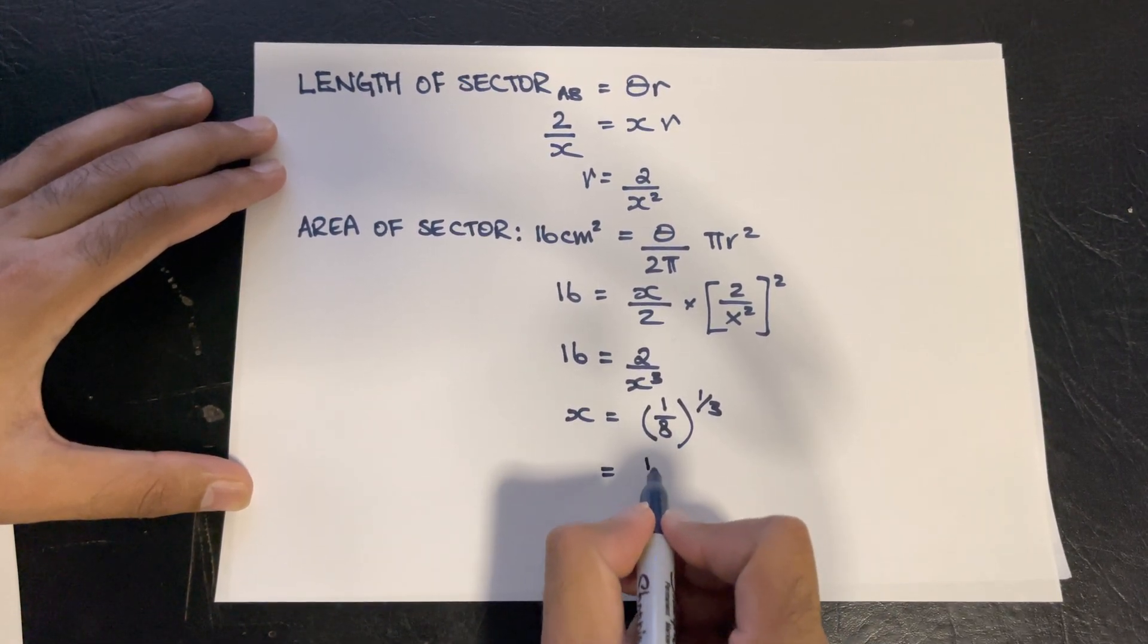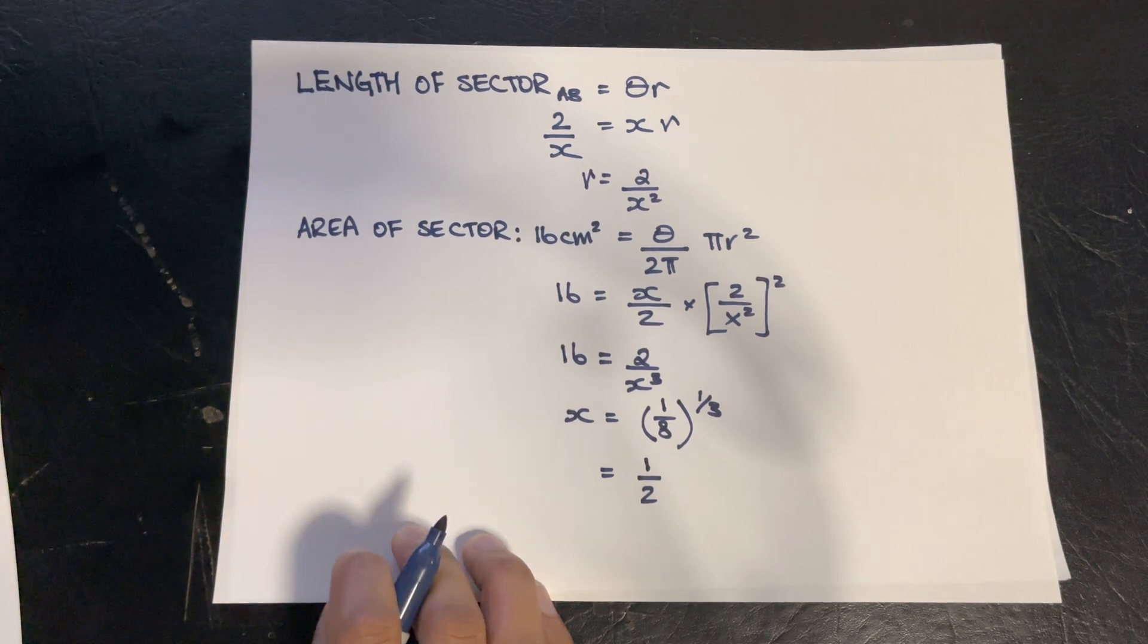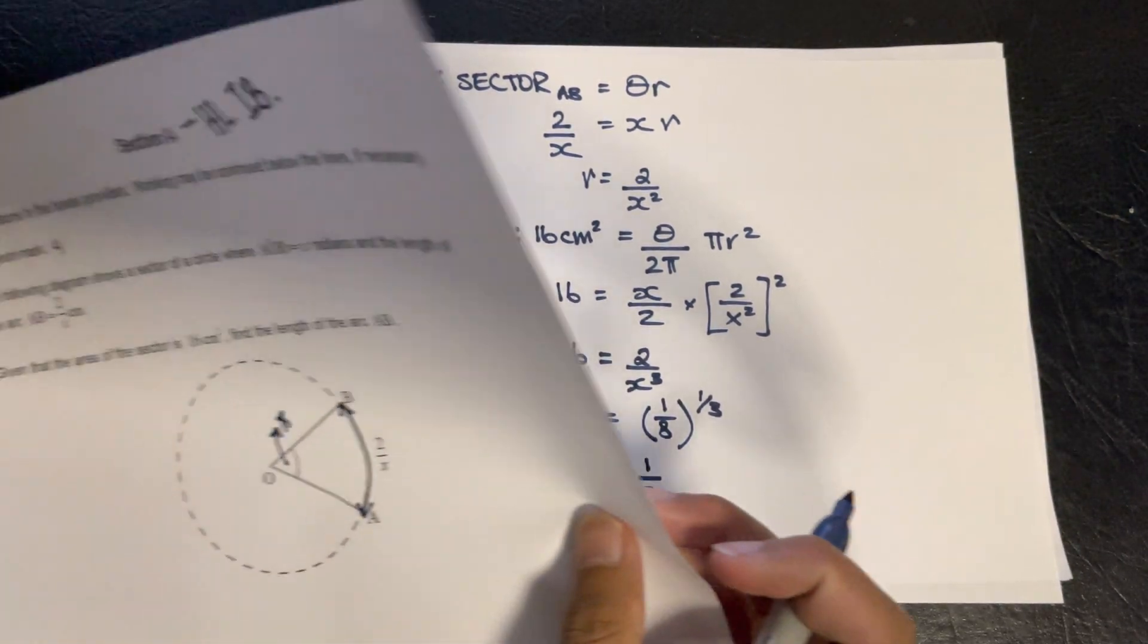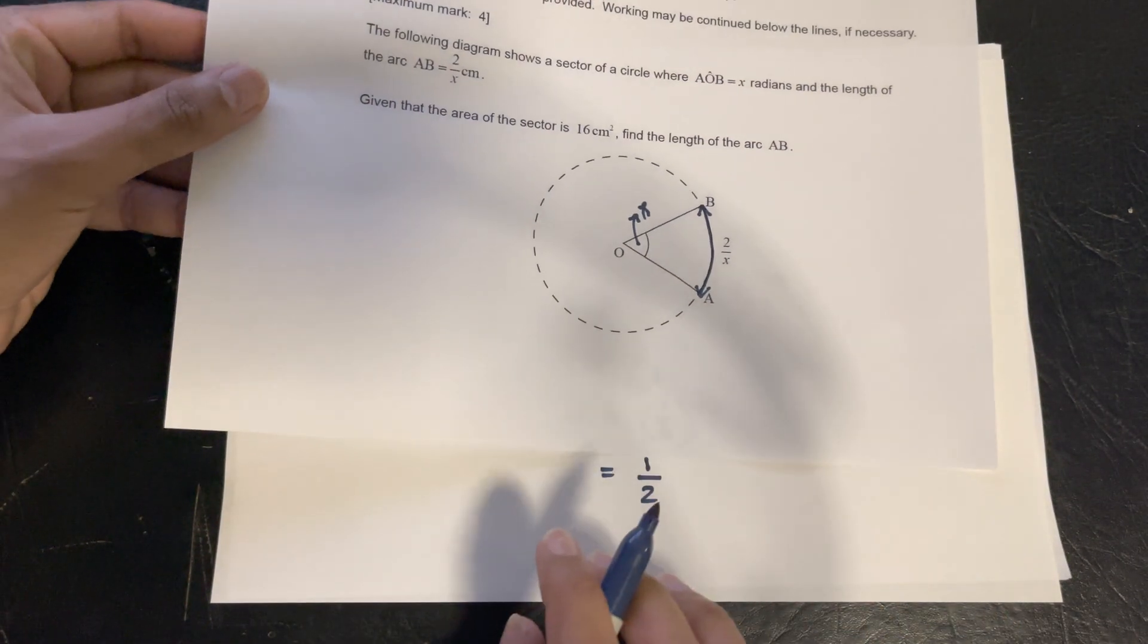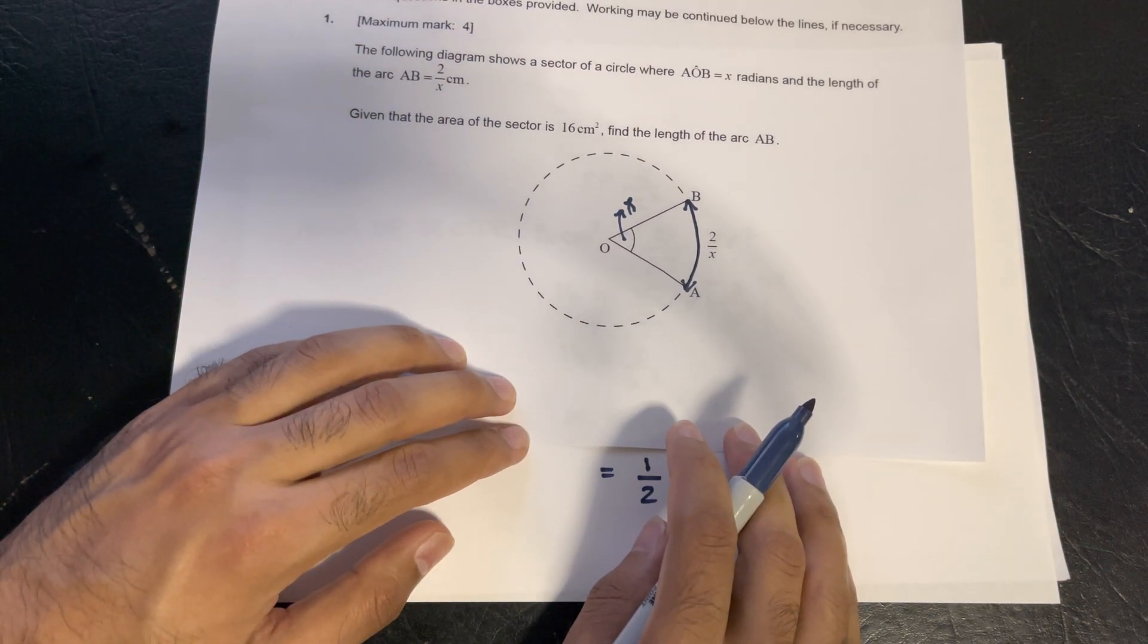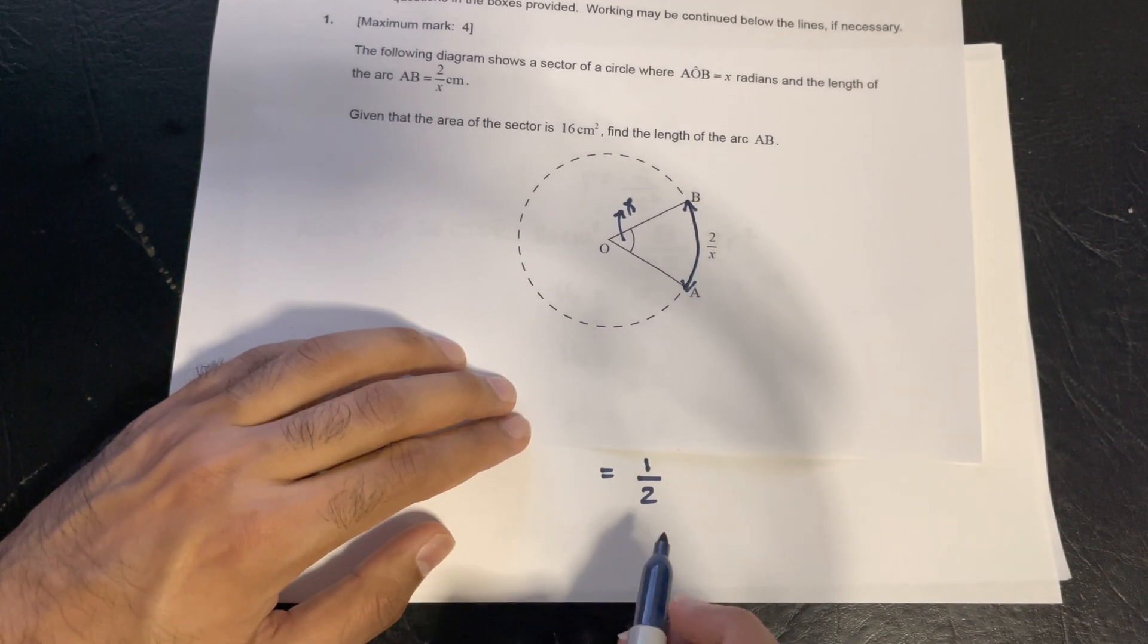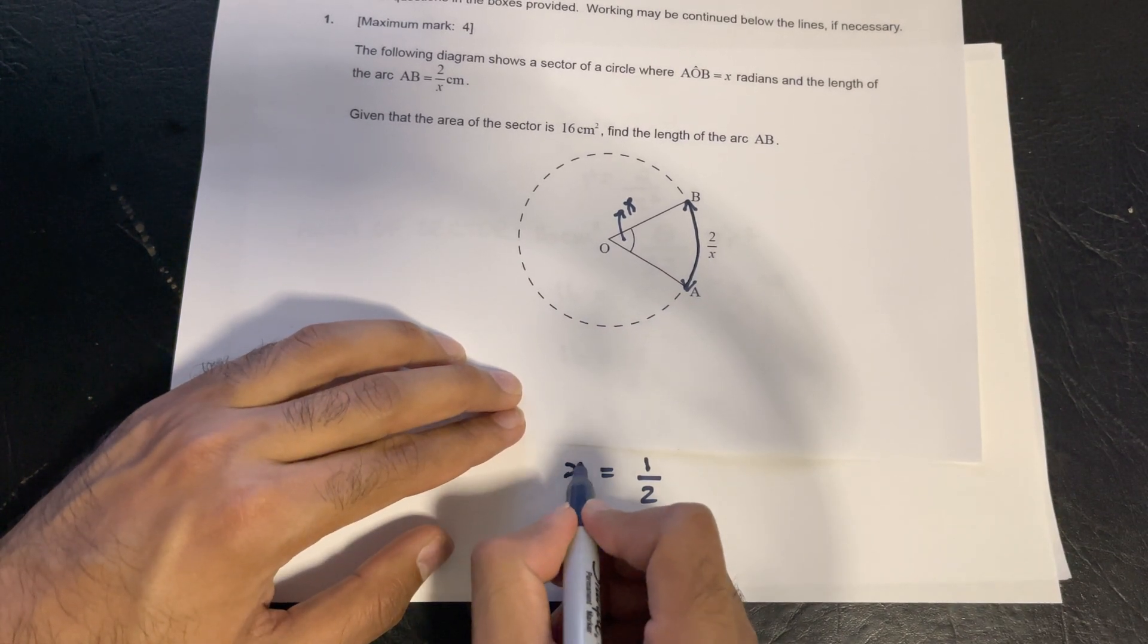And we know x will then equal half. Now, what we know from the question or diagram, that the length between B to A and A to B is expressed as 2 over x, and we know x to be half.